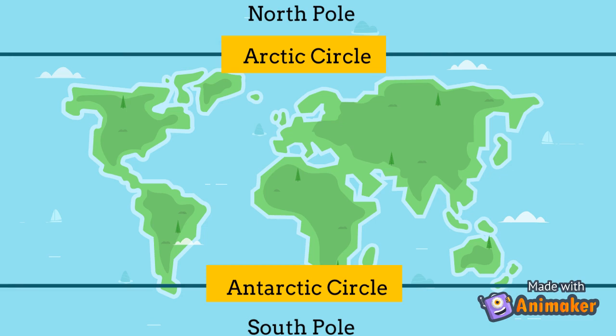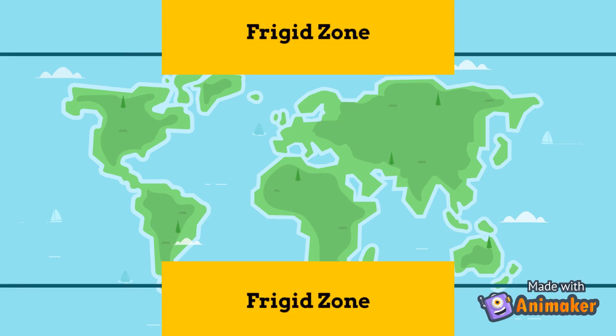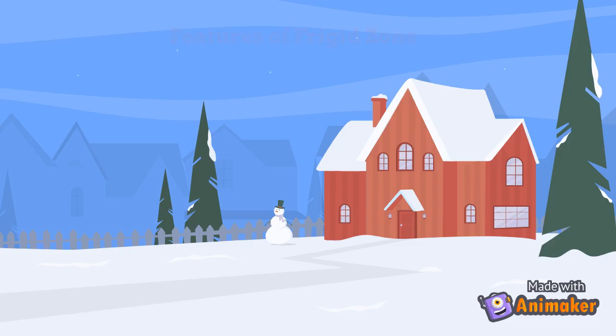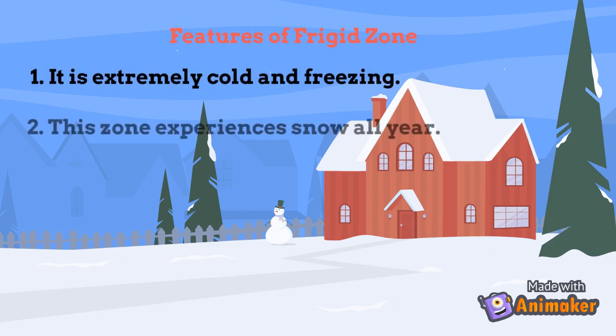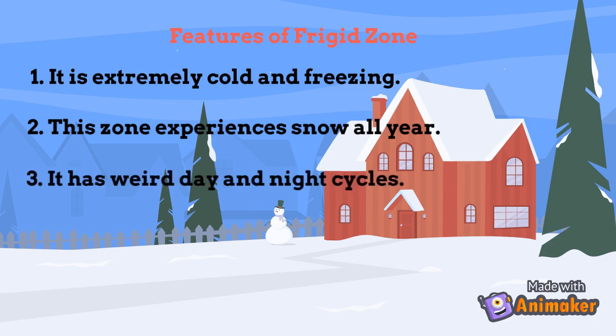The area between the two lines of circles and their respective two poles makes the frigid zone. Features of the frigid zone: it is extremely cold and freezing. This zone experiences snow all year, and it has unusual day and night cycles.